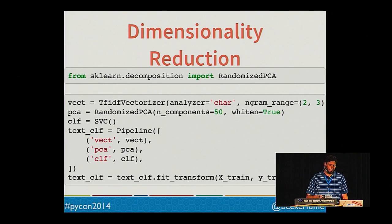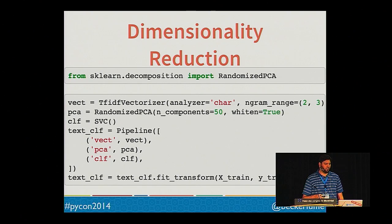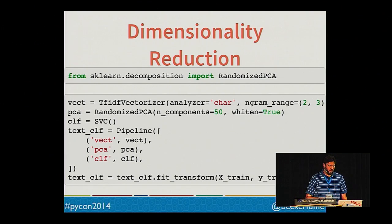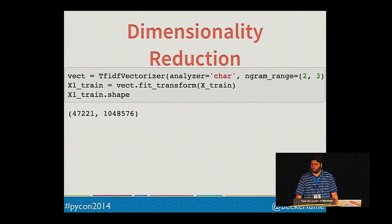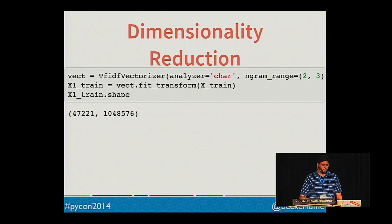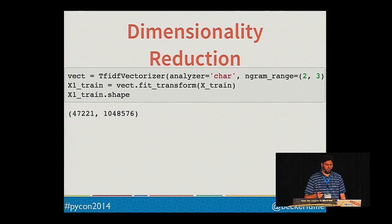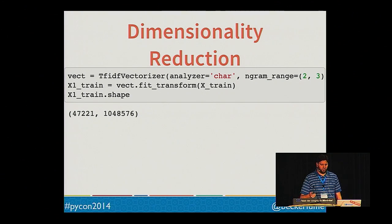PCA allows you to re-express a set of data points in terms of basic components that explain the most variance in the data. In this case, we've specified that the number of new features should be 50. It's easy to add PCA to my classifier — I just add it to the pipeline. If we just run the vectorizer by itself, it produces a dataset with over one million features. Because this is text data, the dataset is sparse, since each column represents an n-gram seen in at least one document, and for any given document most of these n-grams will have a count of zero. Running PCA decreases the number of features from over a million to 50.